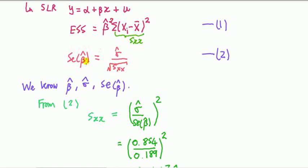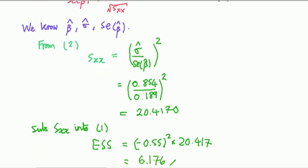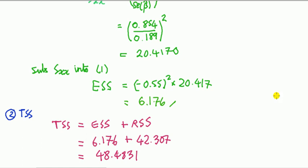So from two, just rearrange it. Corrected sum of squares on that side, standard error this side. This is the square root, so we need to take the square of both sides. Okay, then substitute the numbers there. Substitute this number into equation one to get the ESS. It's that number.